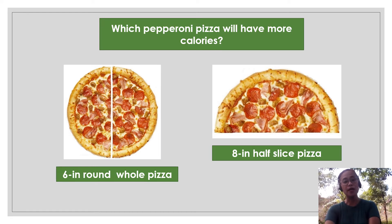Now to find out the accurate answer for this question, we are going to learn two topics for today. It is finding the circumference and finding the arc length of a circle. One of the ways to find out which has more calories is by comparing the circumference of the whole pizza to a half-slice pizza.